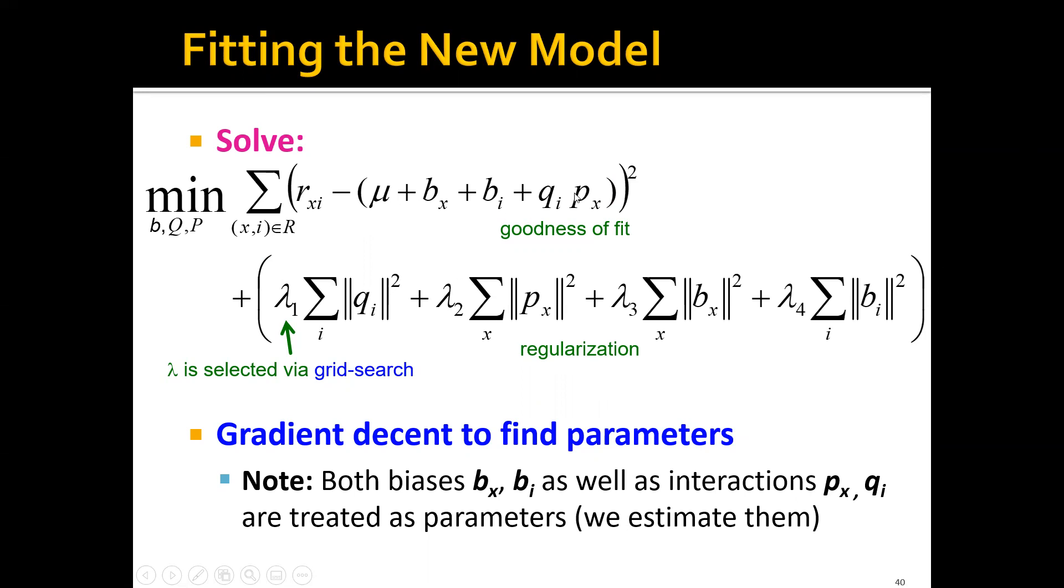We will try to find bx, bi, px, qi such that it can minimize this whole objective function. Here we have four terms. The first term is the error term. These four small terms actually is the predicted ratings from user x to movie i, and this is the ground truth rating. This is the error term to measure the goodness of fit.